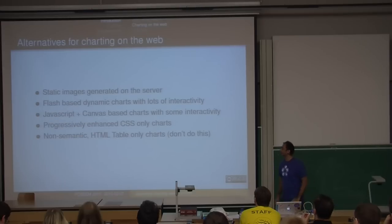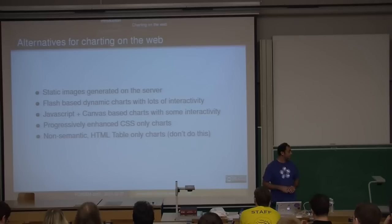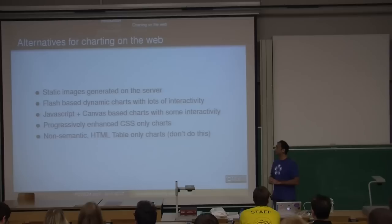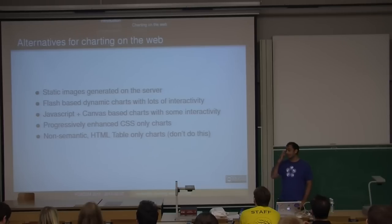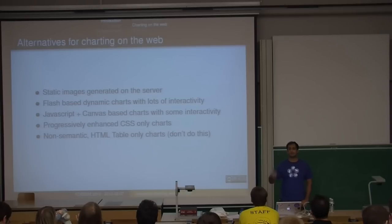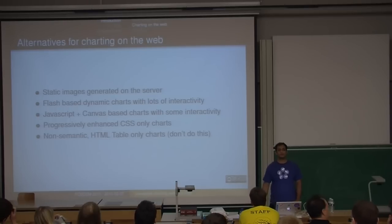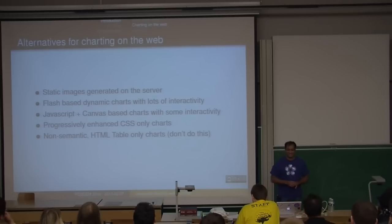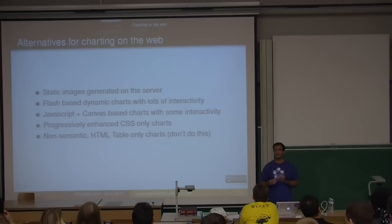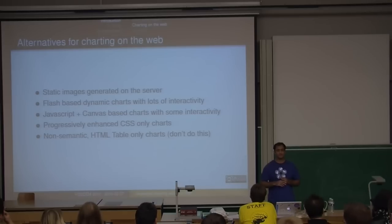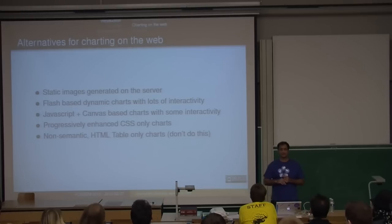What are the alternatives to charting on the web? Initially I used static images. There are libraries for PHP and most back-end languages. If there isn't one, use Google Charts — hit the REST API, pull down the PNG and serve it to your users so Google doesn't figure out your referrer.